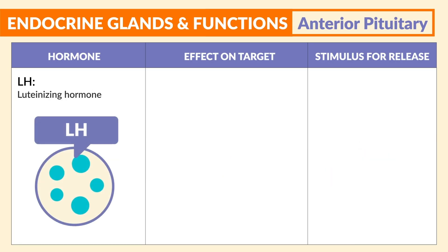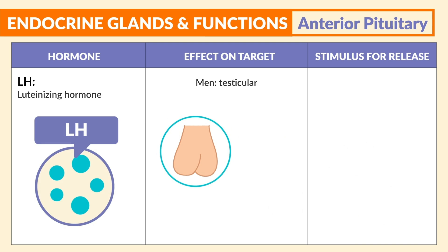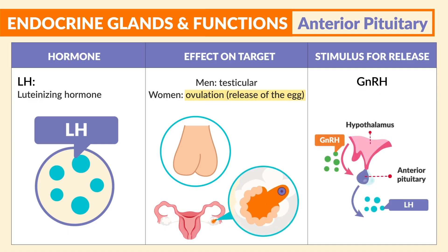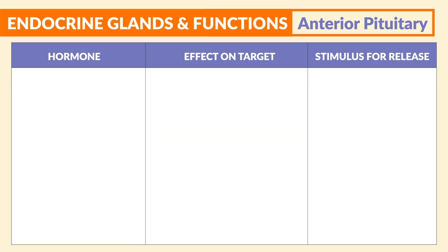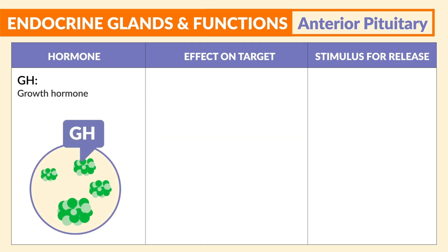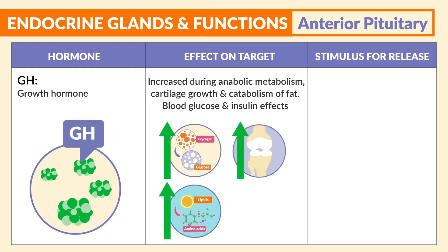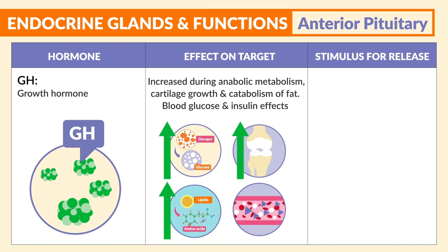Next is LH, the luteinizing hormone. For men, its function is testicular. For women, it plays a key role in ovulation — the release of the egg — and the stimulus is GNRH once again. Next is GH, growth hormone. This increases during anabolic metabolism, as well as cartilage growth, catabolism of fat, and blood glucose and insulin effects. Its stimulus is normal growth and development.